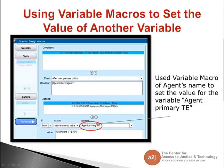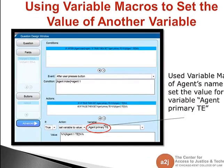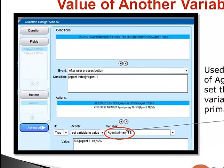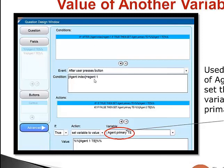The second way to use a variable macro is to set the value of another variable. I used the variable macro of the agent's name to set the value of this new variable, agent primary TE. In this question, now we're on the advanced tab — the question itself asked which person have you selected to be your primary agent? I gave them the option of agent 2's name and agent 1's name. I go to the advanced tab and create a condition: if they select agent 1, if that's true,